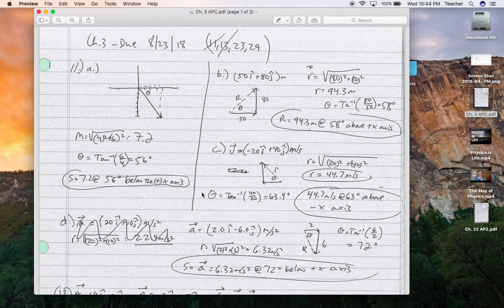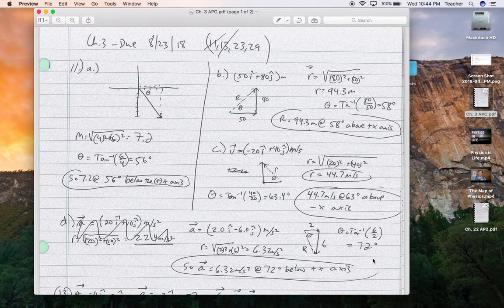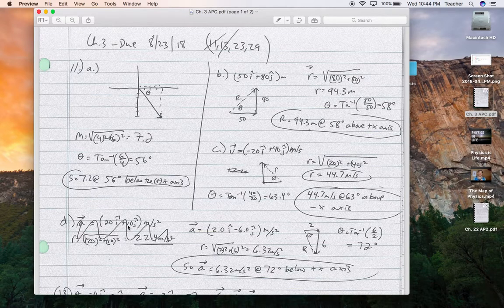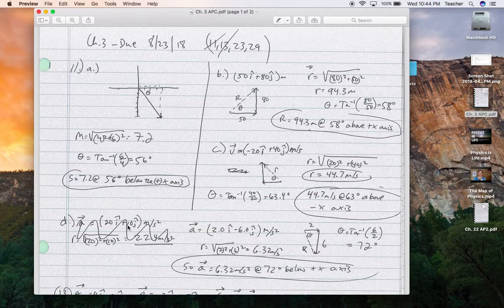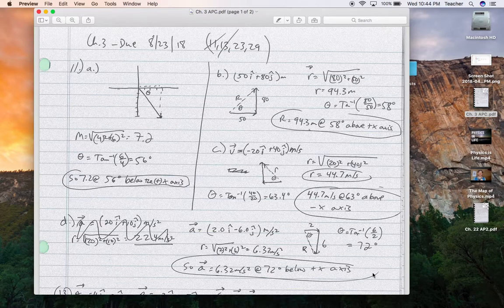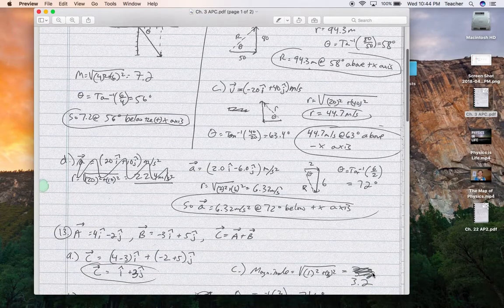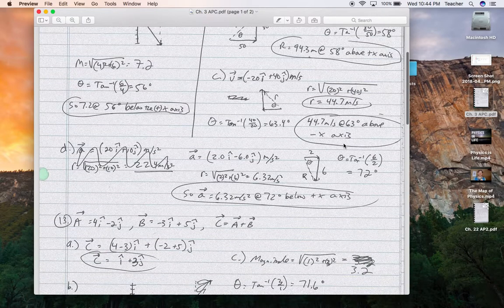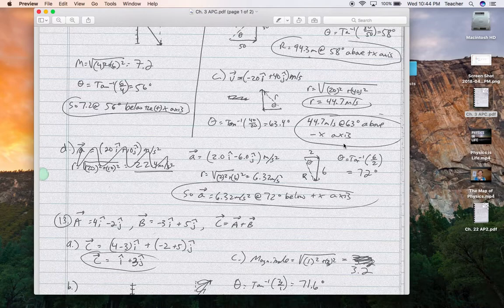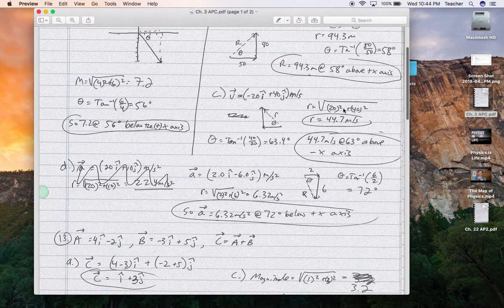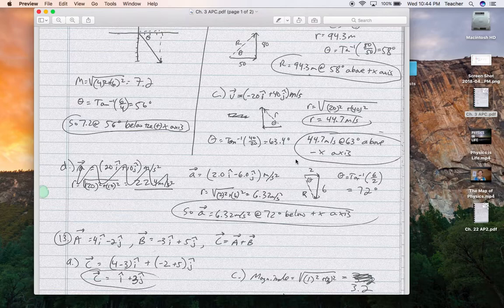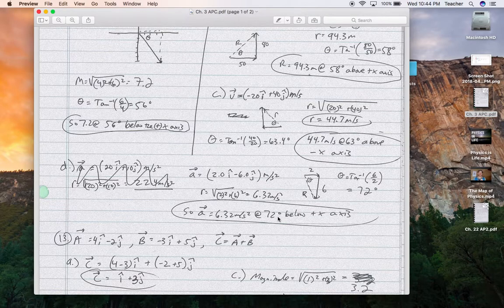B, C, D is down here, which is for a different problem that I screwed up. So for this one, 63 degrees above the negative x axis for C, 58 degrees above the positive x axis for R. For D, 72 degrees below the positive x axis.